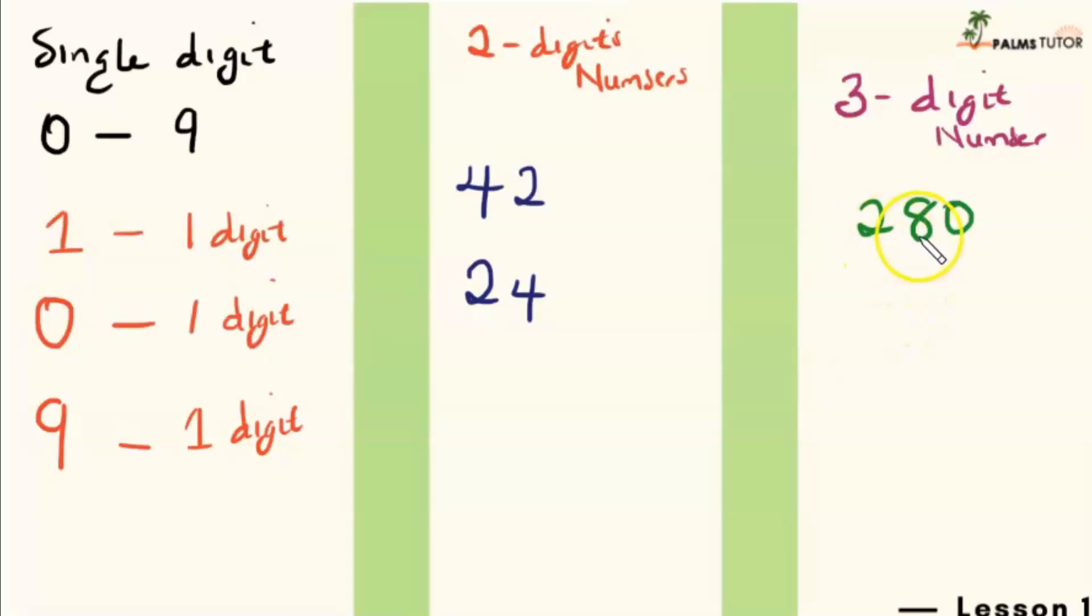I can also decide to bring zero first, and then I have zero, two, and eight. This is 28 because zero before a number is actually meaningless. So this is 28 because there's nothing in the hundredth place.